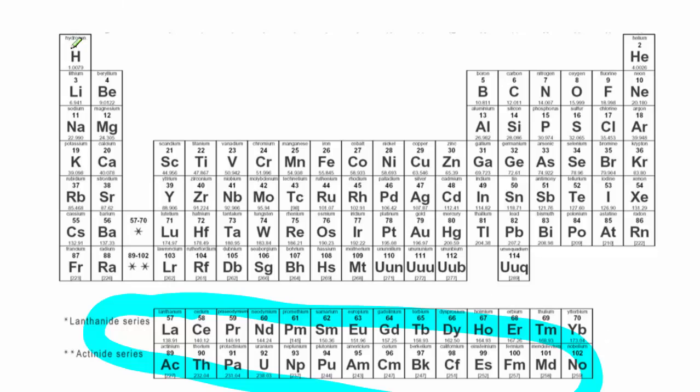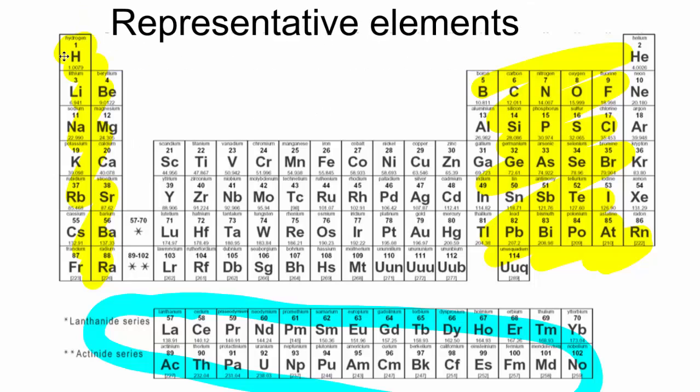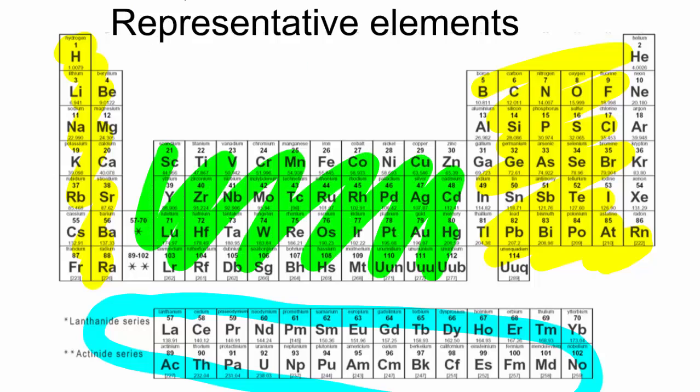These elements in the first two groups are known as the representative elements. So these are the representative elements in yellow. These are the ones that we're going to deal with a lot this year. Here in the middle, in green, we refer to these as the transition elements. These are the transition elements.